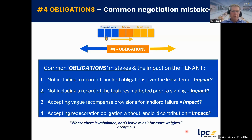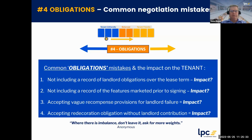A second common mistake is not including a record of the features marketed prior to signing — again, bringing representations into disclosure and then into obligations. A third mistake is accepting vague recompense provisions for landlord failure. You often find within leases, because of the strength of the supply side and because most legal documentation originates from the supply side, that the obligations and recompense provisions from the tenant side are quite clearly stated and numerous.